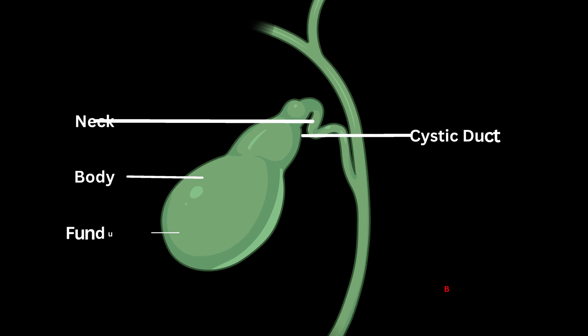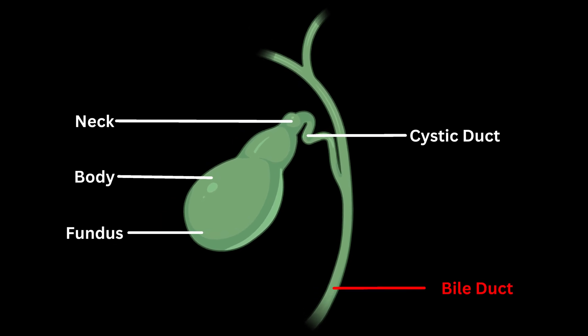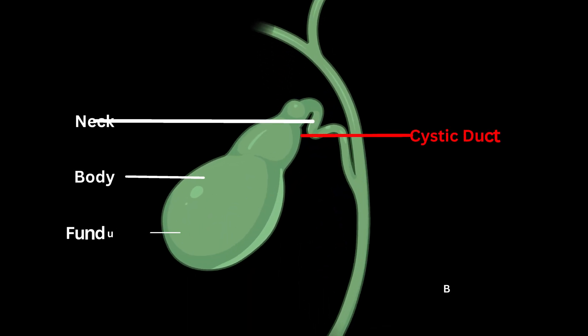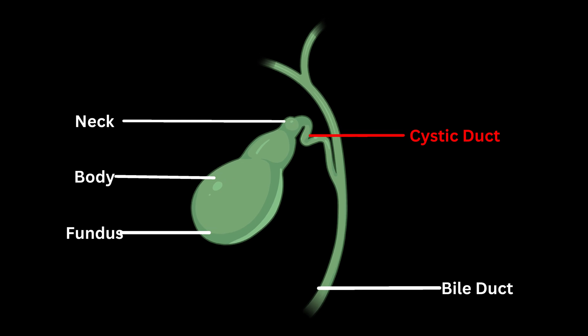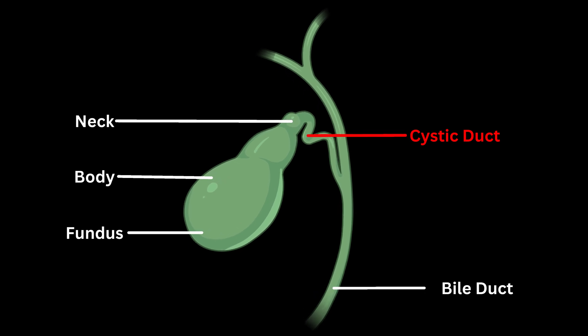The bile duct, also known as the common bile duct, is a tube-like structure that carries bile from the liver and gallbladder to the small intestine. It joins the cystic duct near the neck of the gallbladder to form the common bile duct.